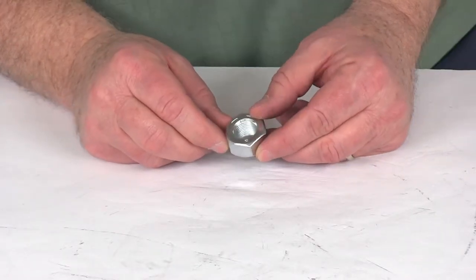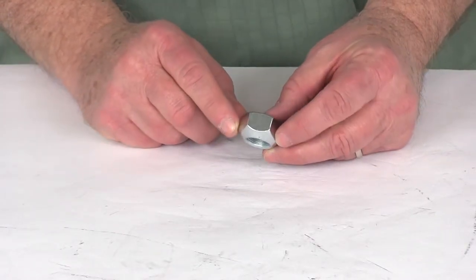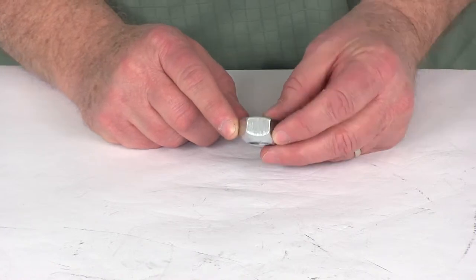Today we're going to take a look at the 5 eighths inch by 18, 90 degree cone steel acorn trailer wheel lug nut.